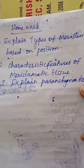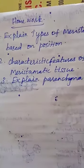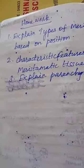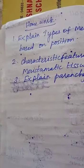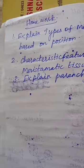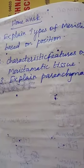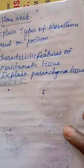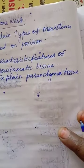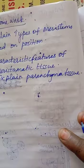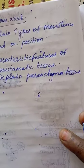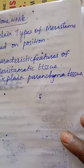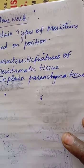For the second question, it is given in your book at page number 210. Five points are given — you can write all of them.